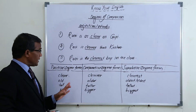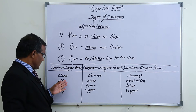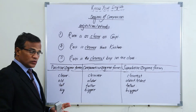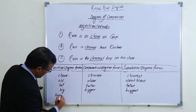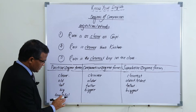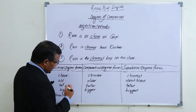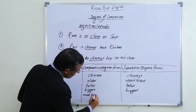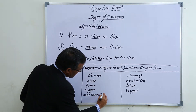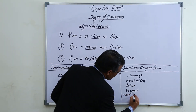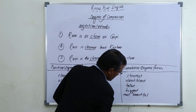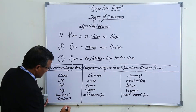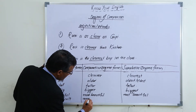If you observe these adjective words, these are really short adjectives — small words. There are also certain long adjectives. For example, 'beautiful' is a longer word, so we cannot use -er and -est here. Instead: 'beautiful — more beautiful — most beautiful.'